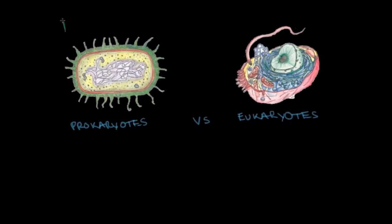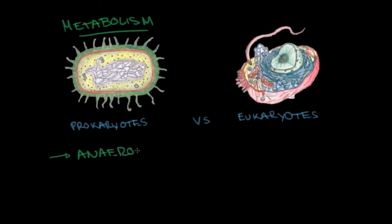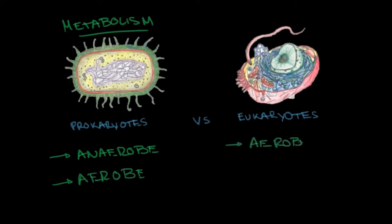In terms of metabolism, we can also see differences between prokaryotes and eukaryotes. Prokaryotes are able to be anaerobic and in some cases aerobic — so they can be both anaerobes and aerobes. Meanwhile, eukaryotes can only be aerobes.